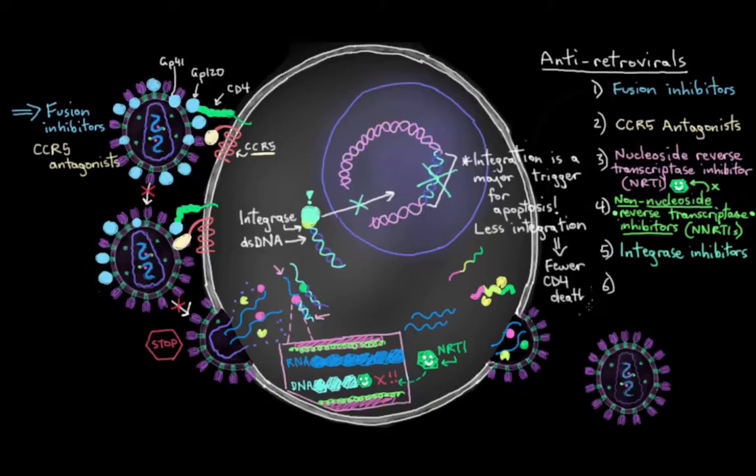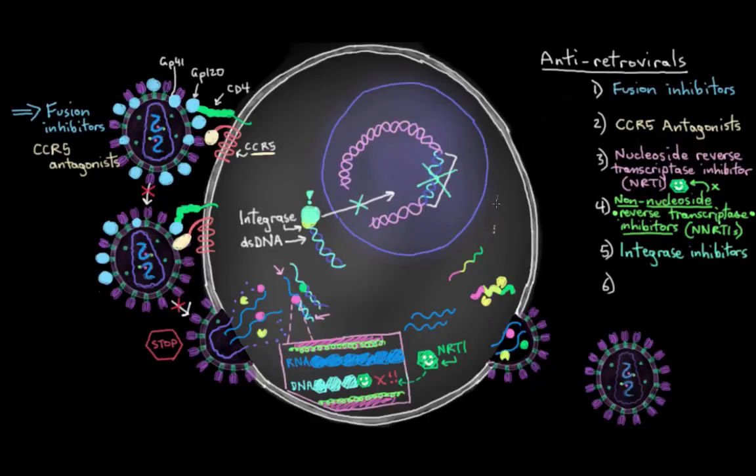Now let's say you're not taking an integrase inhibitor. What's the next and sort of last step we'll talk about where you can interfere with HIV? Well remember that after integration, our RNA polymerase is gonna come along and it's gonna transcribe this bit of DNA here, including the viral DNA unfortunately, and turn it into viral RNA and viral mRNA. And then this mRNA is gonna hop into a ribosome and get translated into a viral polyprotein.